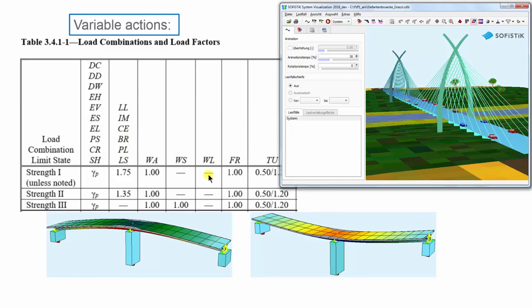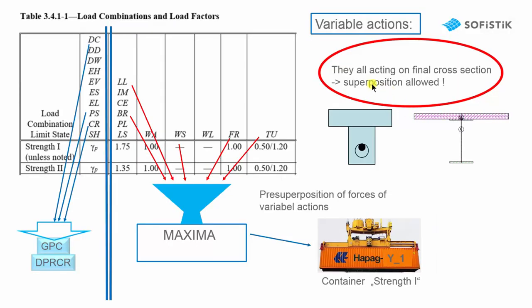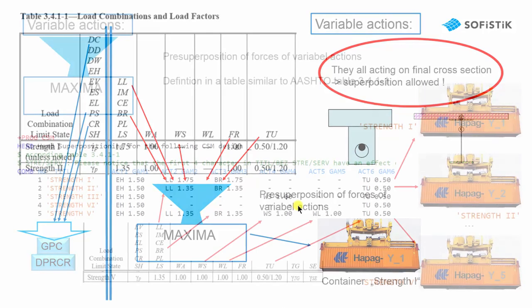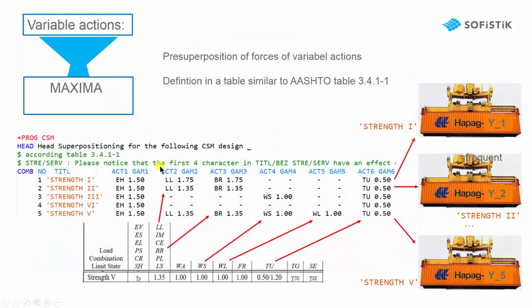And so they can be pre-superposed in maxima. In the pre-superposition of the variable actions, these actions are combined in maxima with the individual factors of the AASHTO table 3.4.1.1. And the result is stored in a so-called container, strength 1 and strength 2, and so on.